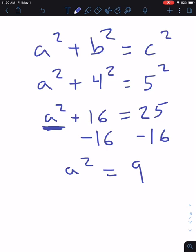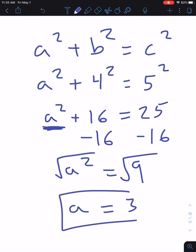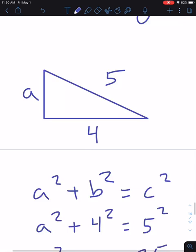The variable's starting to be more isolated. Now if we want to isolate it further, which we do, we have to get rid of this squared. The square root of a squared is going to be just a. We have to do one side, we have to do the other. So the square root of 9 is 3, so now we know that the length of side a is 3.